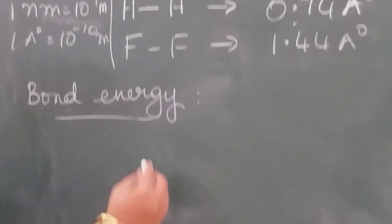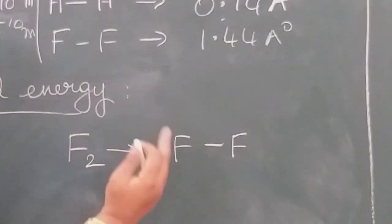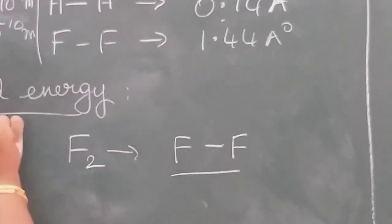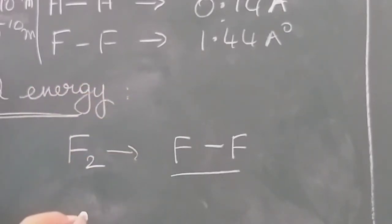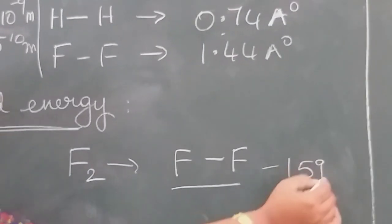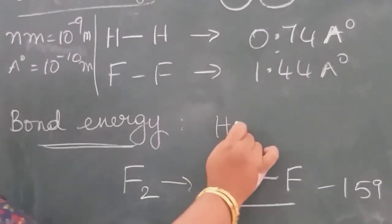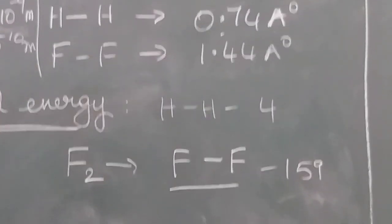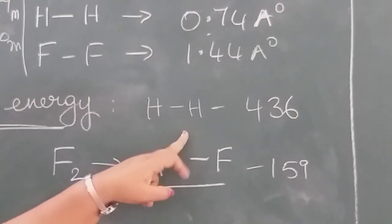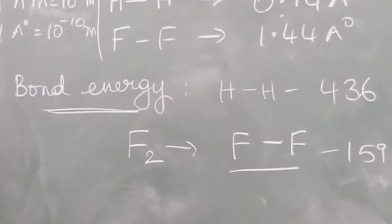Next is bond energy. For example, fluorine molecule F2 is formed with a single bond. If you want to break this bond, we need some energy — that energy is called bond energy or bond dissociation energy. The bond energy for fluorine is 159 kilocalories, meaning you need 159 kilocalories to break the molecule. For hydrogen, it is nearly 436 kilocalories — to break the bond between hydrogen and hydrogen, you need 436 kilocalories of energy.